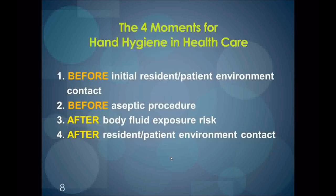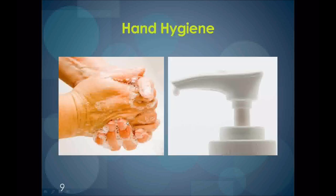What constitutes routine practices when doing oral care? First and foremost is practicing proper hand hygiene. Hand hygiene is the single most important procedure in preventing the spread of infection. The four moments for hand hygiene in health care are: before initial patient or patient environment contact, before an aseptic procedure, after body fluid exposure risk, and after patient environment contact. Hands should also be cleaned before touching a resident or anything in the resident's environment, such as their oral hygiene tools. This act protects you as a caregiver and the resident from germs on your own hands.